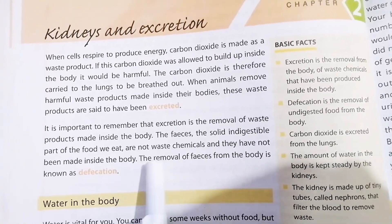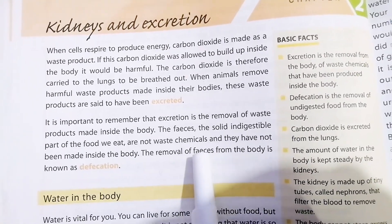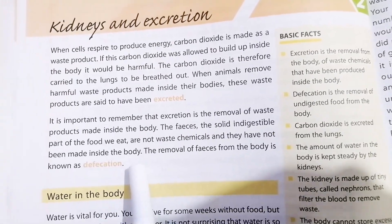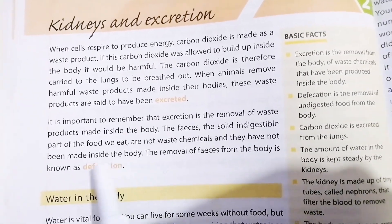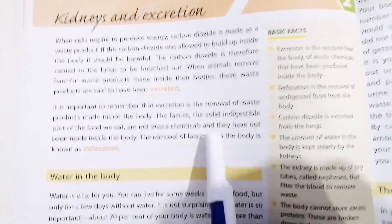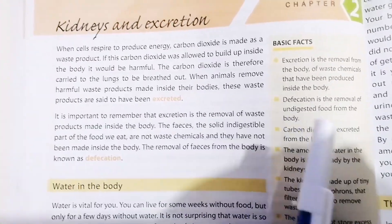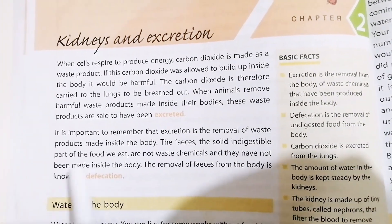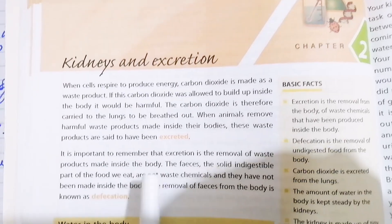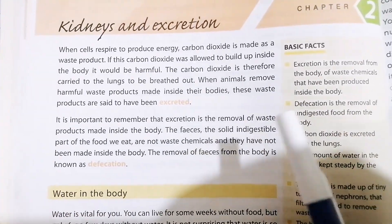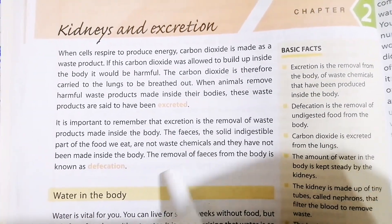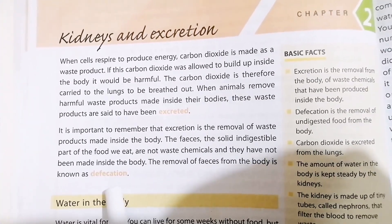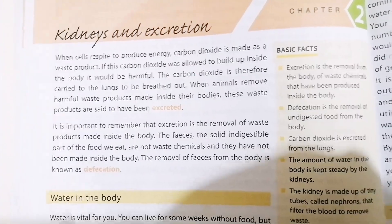The solid indigestible parts of the food we eat are not waste chemicals made inside the body. When we eat, waste products pass out through the feces, while other food we eat, such as proteins, is useful and used in the blood and body. Removal of feces from the body is known as defecation.